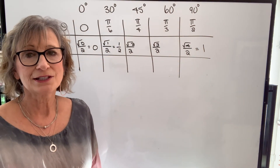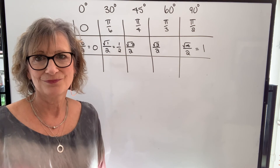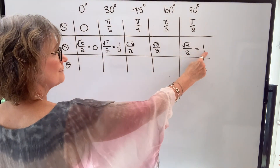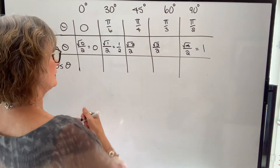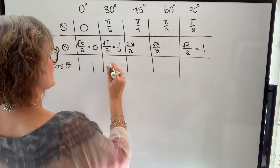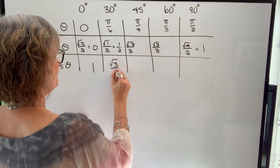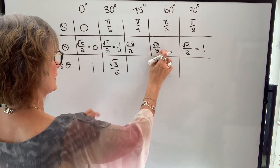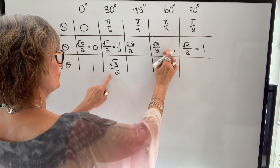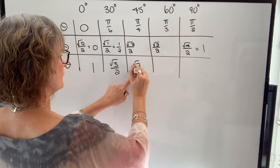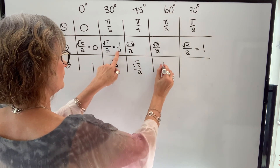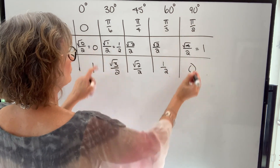To get cosine it's even easier — you start at the end of the sine row and go backwards. So cosine of 0 is 1, cosine of pi over 6 is root three over two, cosine of pi over 4 is root two over two, cosine of pi over 3 is one half, and cosine of pi over 2 is 0. Knowing this chart might make things a lot easier if you have to remember these special values.